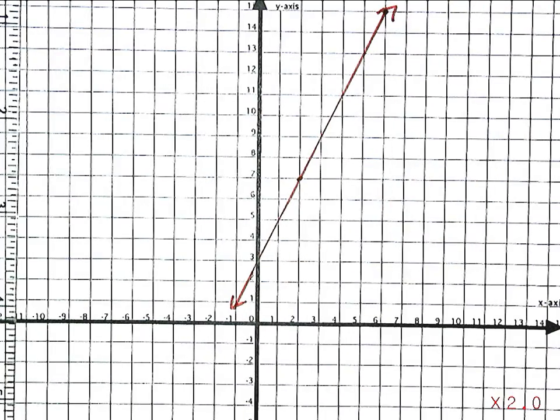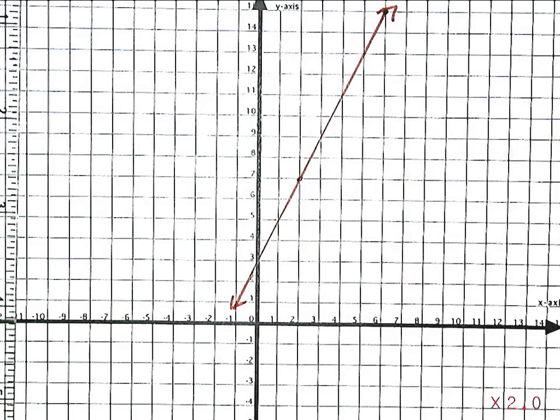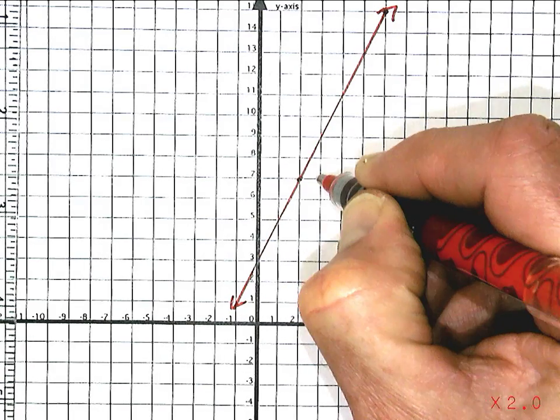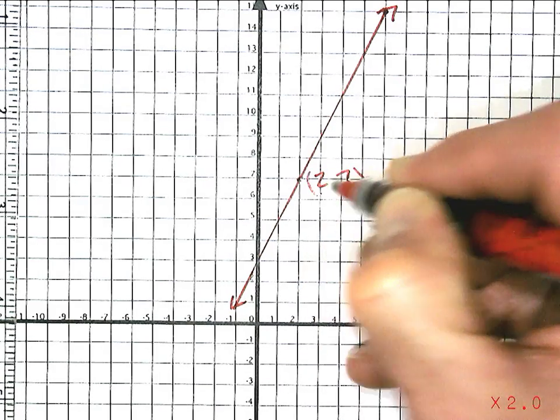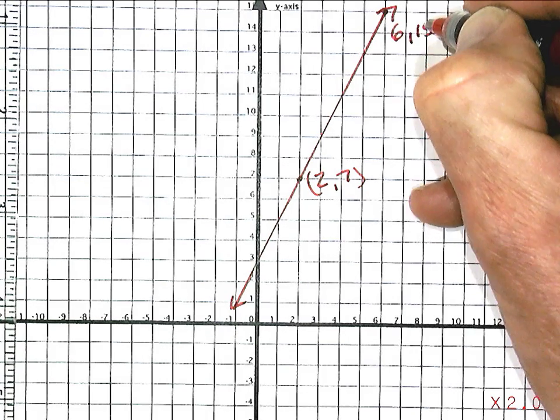So there's the line. Two points, that's all you need to make a line. There's the (2, 7) and (6, 15) points.